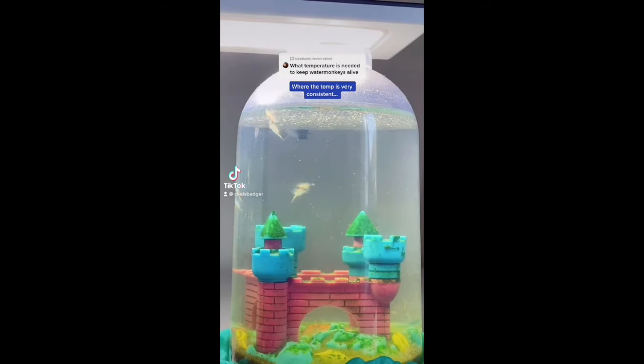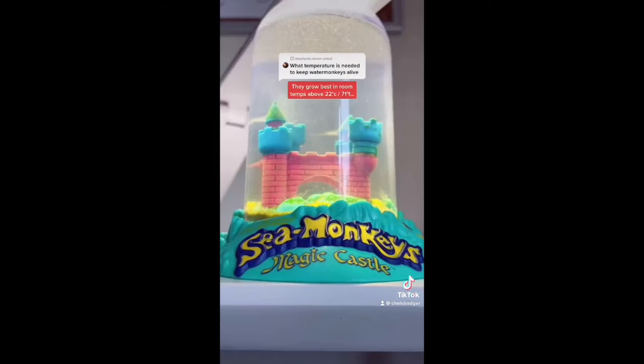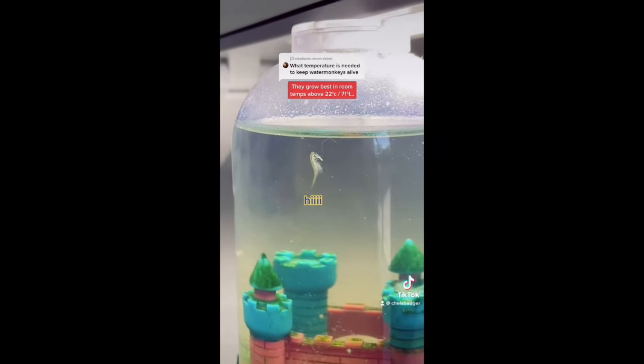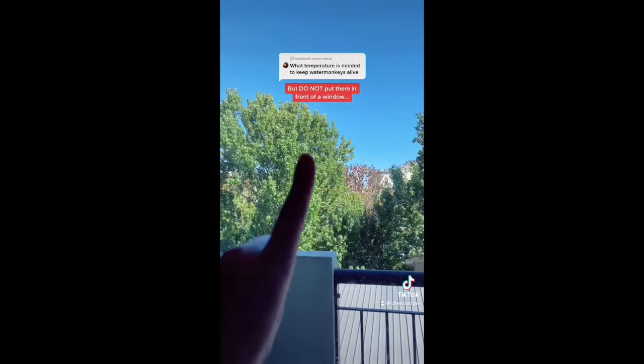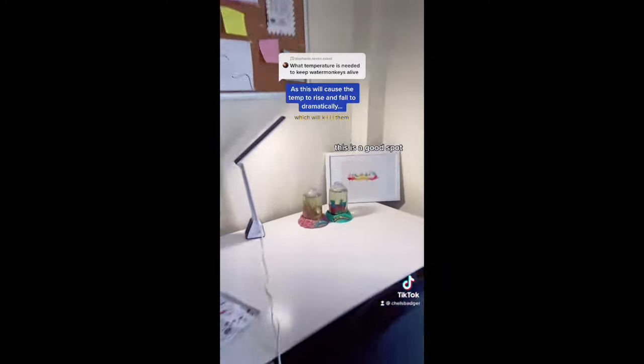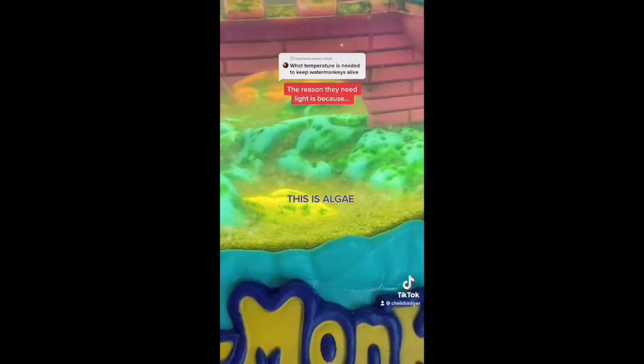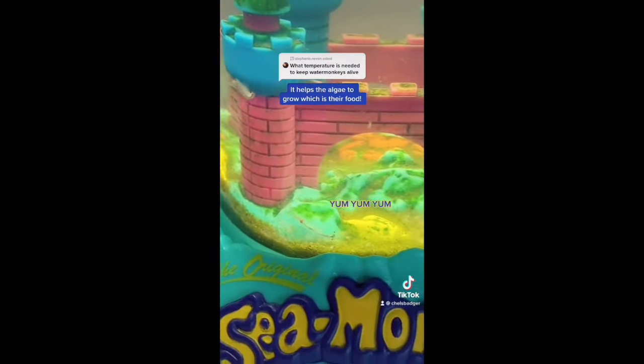Sea monkeys should be kept in water where the temperature is very consistent and they grow best in room temperatures above 22 degrees Celsius. They do need light but do not put them in front of a window as this will cause the temperature to rise and fall too dramatically.